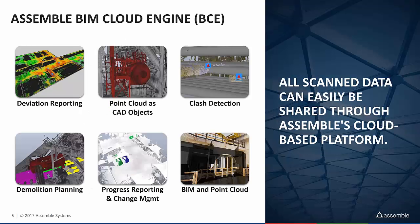Let's take a look at some of these workflows. Deviation reporting compares the BIM to the points — it can be used for slab flatness or elevator shaft clearance. Brushing and selecting your point cloud to create different layers uses point cloud as a CAD object. Clash detection compares your as-built field condition to the new design. Demolition planning and sequencing ensures all objects that need to leave the site have a free pass. Progress reporting, change management, and viewing point cloud with BIM together in one viewer for team sharing are also key workflows.